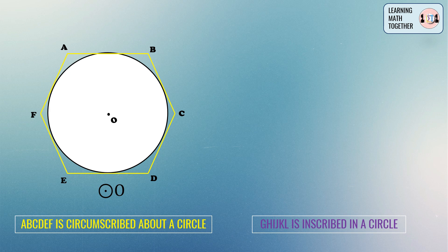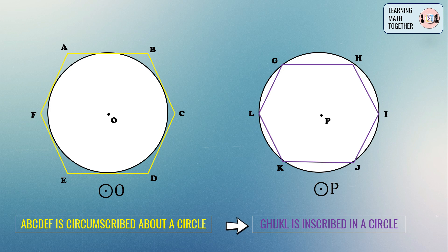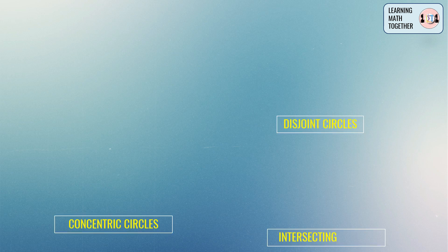Now let us go to a polygon which is inscribed in a circle. Let's draw a circle — we have circle P — and then draw a polygon inside the circle. We have a hexagon named using six capital letters: hexagon GHIJKL is inscribed in a circle. You will notice that the vertices of our polygon are actually points on the circle.